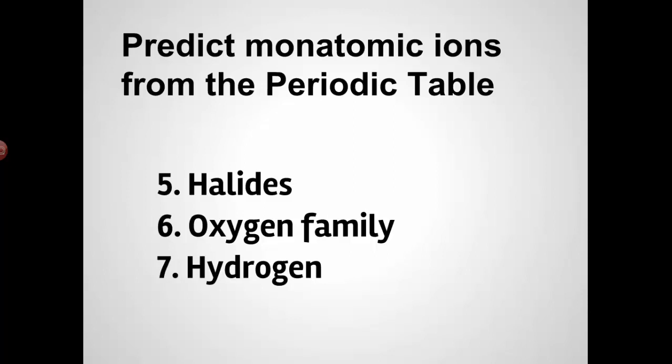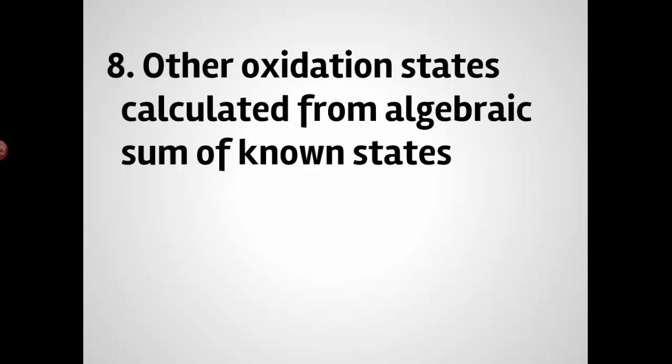And then hydrogen, hydrogen's a tricky one. Hydrogen is almost always plus one. Its oxidation state is almost always plus one, unless it's with a metal. If it's with a metal, then it's minus one. It's something called a hydride.